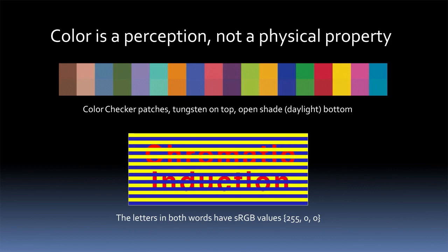The letters in both of the words, the word chromatic and the word induction, and that's what the name of this phenomenon is, are the same. They're 255,0,0 in sRGB. So they're pure red primary colors in 709. And yet I think a lot of you, if you stand back a little from the screen, they won't look red.